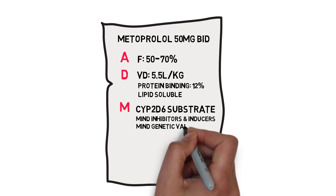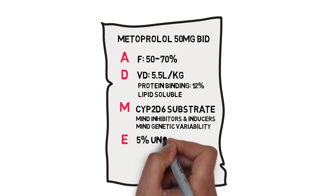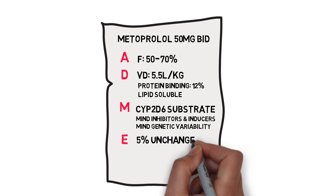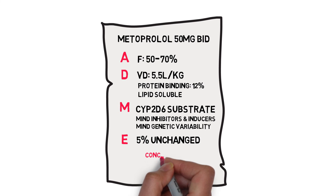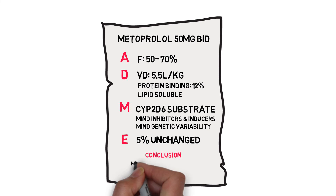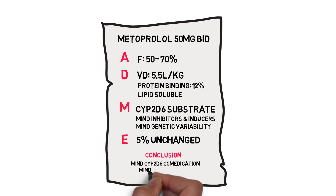However, my patient uses 100mg a day with good clinical effect, so that most likely isn't an issue. Excretion is performed by the kidney — about 5% is unchanged, the rest are metabolites — so renal injury isn't a problem with metoprolol. Concluding: possible problems with metoprolol are co-medication that influences CYP2D6, and liver failure. At first it will take quite some time to do this for your patient's list of medication, but after a while you'll be able to do a lot of this by heart.